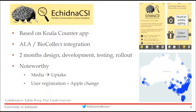Another interesting thing to note: between the Koala Count and the Echidna CSI project, Apple wouldn't allow us to have compulsory registration at the start — it was very minimal, just an email-like address. They said you had to include a skip registration button; they wouldn't allow us to prevent people using it until they registered. That was something we only found out when going through the approval process.